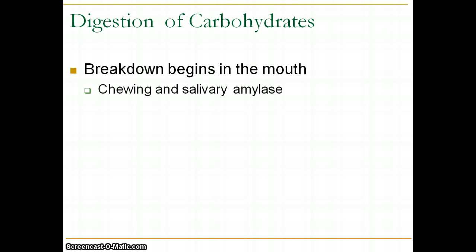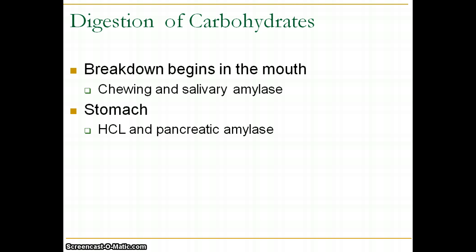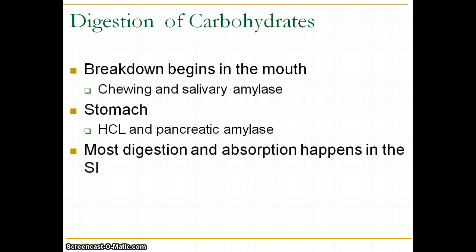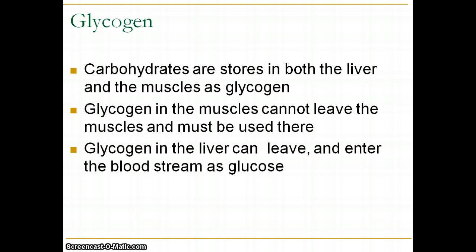When we digest carbohydrates, digestion begins in the mouth with chewing as mechanical digestion and salivary amylase breaking it down. It moves to the stomach where hydrochloric acid and pancreatic amylase break it down further. The rest of digestion and absorption happens in the small intestine. Carbohydrates are then stored in the liver and muscles as glycogen — in the muscles it can't leave, but in the liver it can re-enter the bloodstream as glucose.